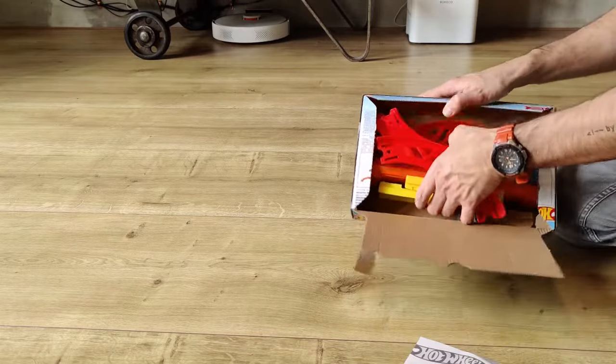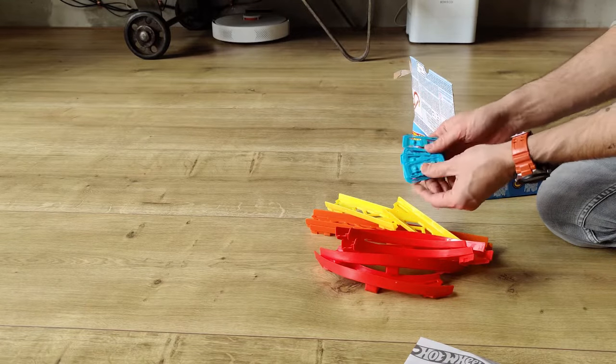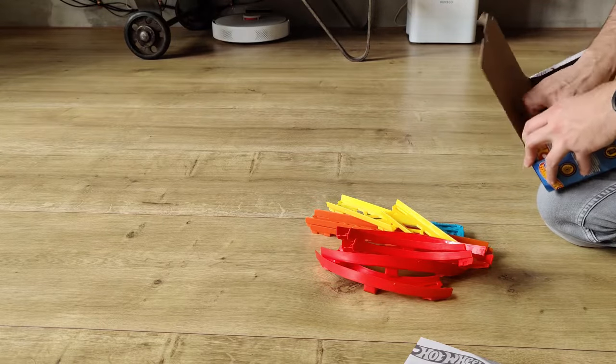We have curved tracks, a few straight tracks, long and small ones. These little blue pieces which are essential to connect these to each other. So that is pretty cool, you can easily connect those.